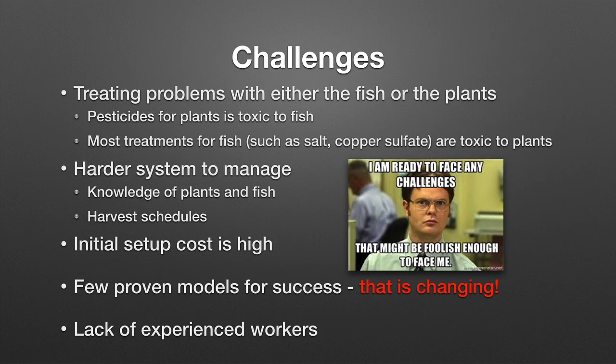Some of the challenges are that it's really difficult to treat any issues with the fish or plants. You can't use any pesticides or herbicides because they're toxic to our fish. And a lot of fish disease treatments — such as salt or copper sulfate — are toxic to the plants. This makes it a little bit harder to manage overall, but it also lends itself to a more sustainable production and, in the eyes of the consumer, a better way to produce and eat the food.